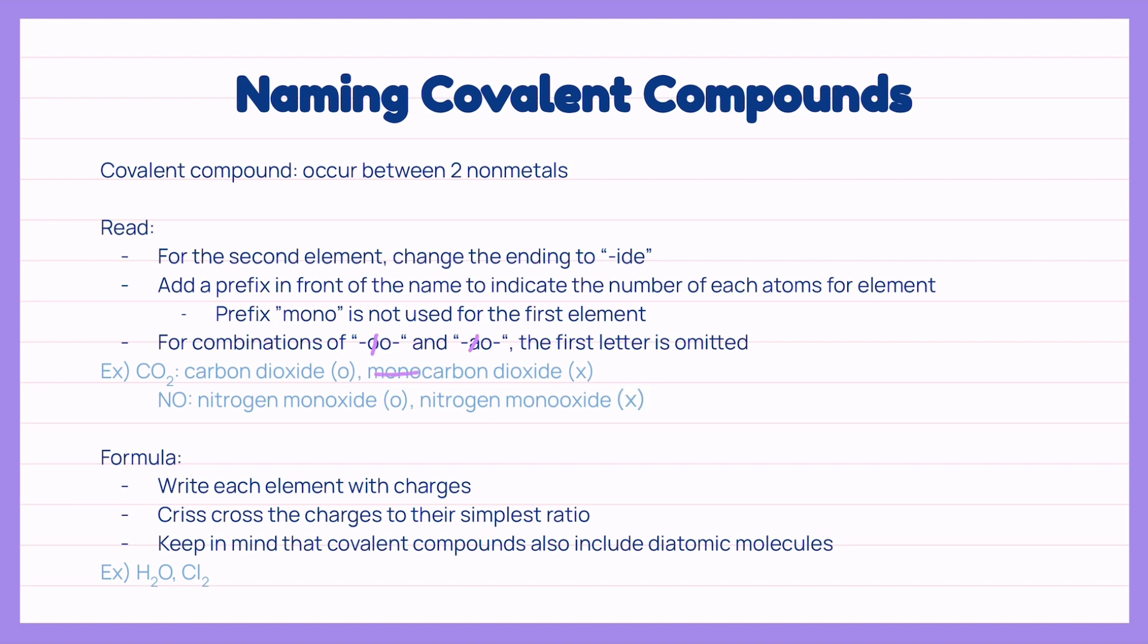For NO, we read nitrogen monoxide instead of nitrogen monoxide with two O's. We simply omit one O. The formula for covalent compounds is very simple. We write down the element with charges and crisscross to their simplest ratio. However, we have to keep in mind that covalent compounds also include diatomic molecules like the Cl2.